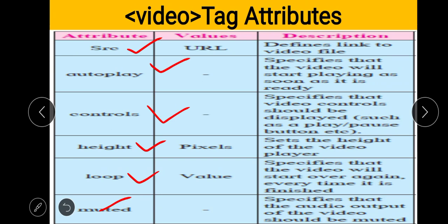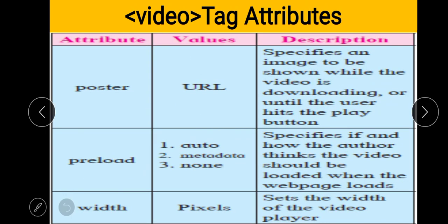Muted specifies that the audio output of the video should be muted, in case you want to mute while playing. Note: autoplay, controls, and muted are empty attributes. The poster attribute takes a URL value — it specifies an image to be shown while the video is downloading or until the user hits the play button — similar to YouTube thumbnails shown before a video starts.